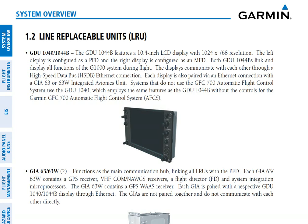The first thing we're going to look at is the display, called the GDU 1040/1044 Bravo. That's the unit right here. This is where you have your LCD screen, your buttons, and your bezel. There will be two of these — one will be the PFD, the other will be the MFD — and they'll be connected together through a high-speed data bus, which is an Ethernet connection, so they can share information back and forth.